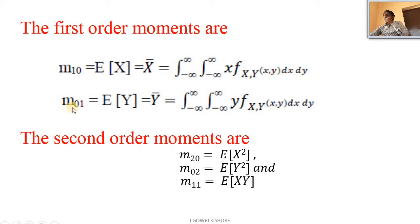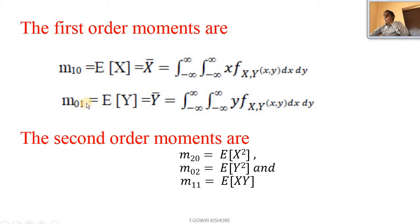Next, m₀₁ means n equal to 0 and k equal to 1. So that is equal to expectation of y, equal to y-bar, equal to integral from minus infinity to infinity, integral from minus infinity to infinity, y into f(x, y) dx dy. This represents the first order moment, since the sum n plus k equals 1 plus 0 or 0 plus 1, both equal to 1.